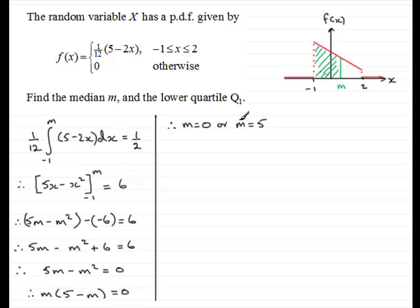Now the median cannot be two values, it's only got to be one value. We can look at the probability density function and you can see that the median m lies between minus one and two, so therefore we need to select m equaling zero. So therefore the median m equals zero. That's the first part of the question done.